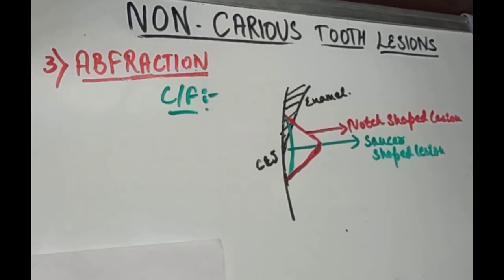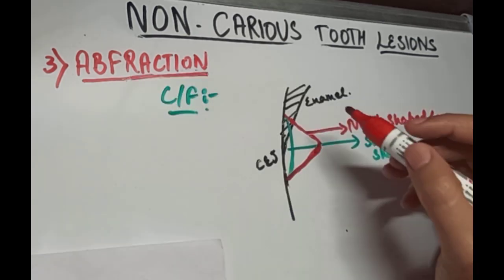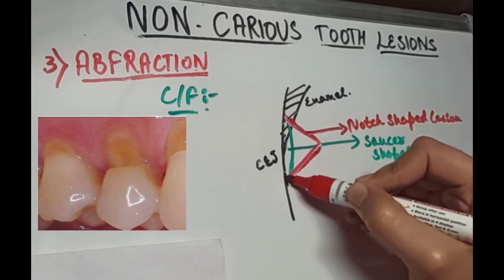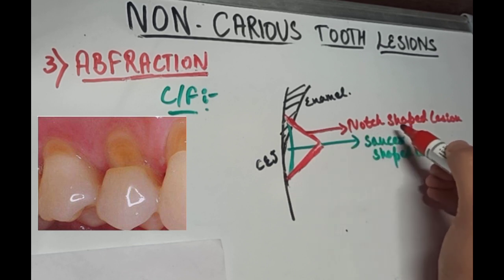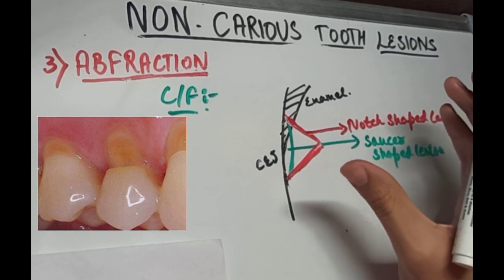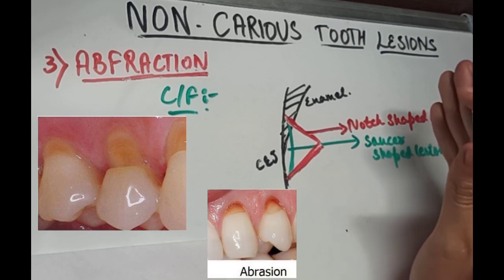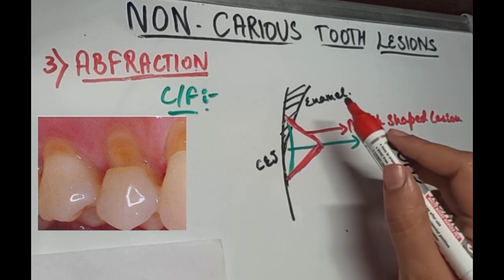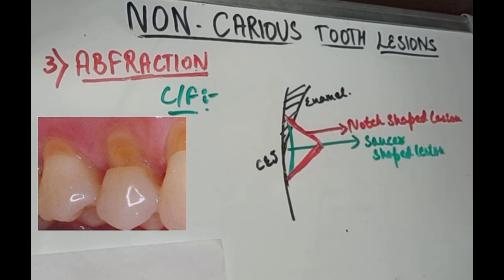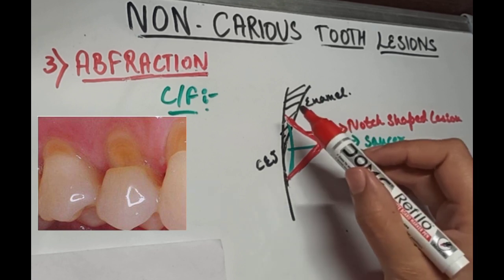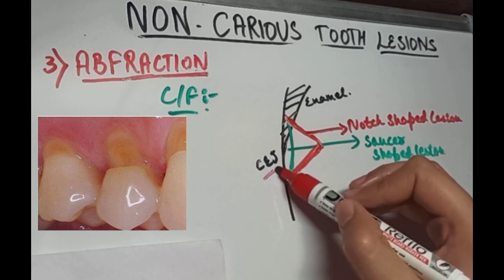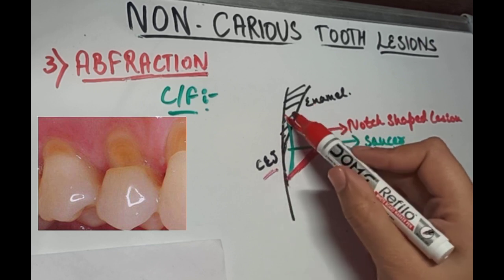The clinical features of abfraction include sharp notch or wedge-like lesions with sharp margins and internal line angles — unlike abrasion, which has smooth saucer-shaped defects. These forces can also lead to loss of bonded Class V restorations. The defects are generated at the thinnest region of the enamel, that is at the CEJ, and are confined to the gingival third of the clinical crown.